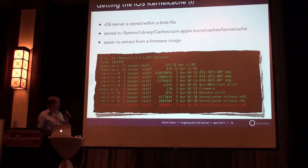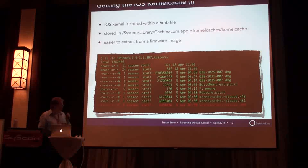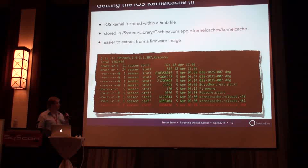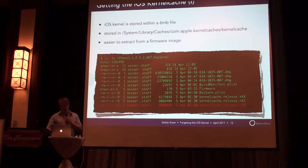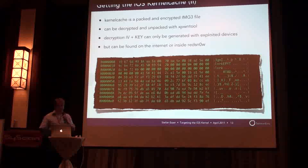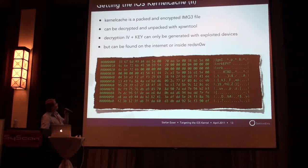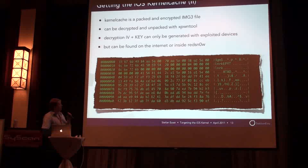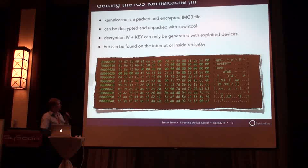It's actually a mystery why Apple puts three kernel caches in there, because every device has its own firmware image. All three kernel caches are for different devices: the N90 is the iPhone 4, the K48 is the iPad 1, and the N81 is the iPod Touch 4. So only one would actually be needed. When you use a hex dump on the binary, you will see that it's very cryptic, and basically the first four bytes tell you that it's a so-called IMG3 file.